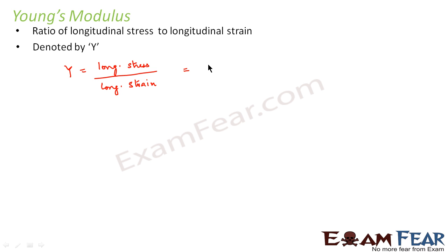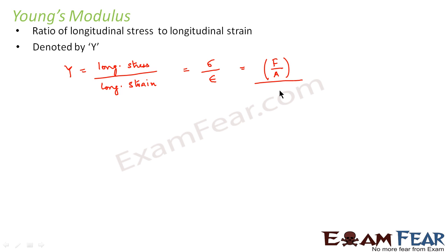Longitudinal stress is generally denoted by sigma and longitudinal strain by epsilon. Longitudinal stress is force per unit area, and longitudinal strain is the change in length divided by the original length. So Young's modulus Y equals F divided by A, divided by delta L divided by L, which gives us FL divided by A·delta L.